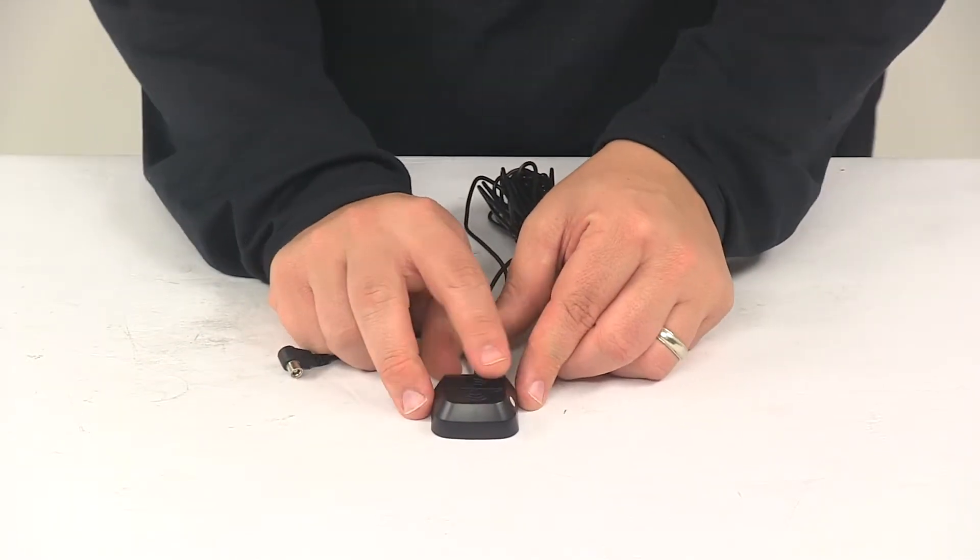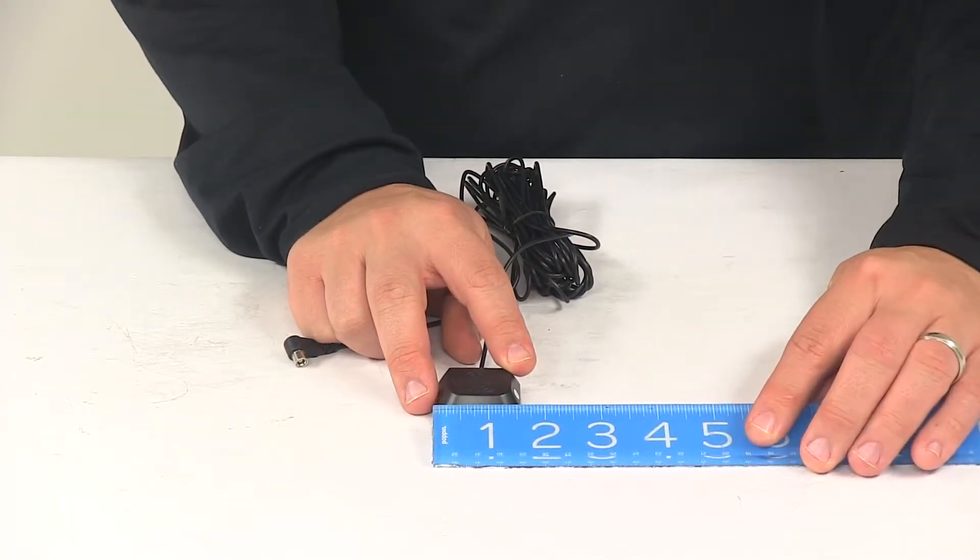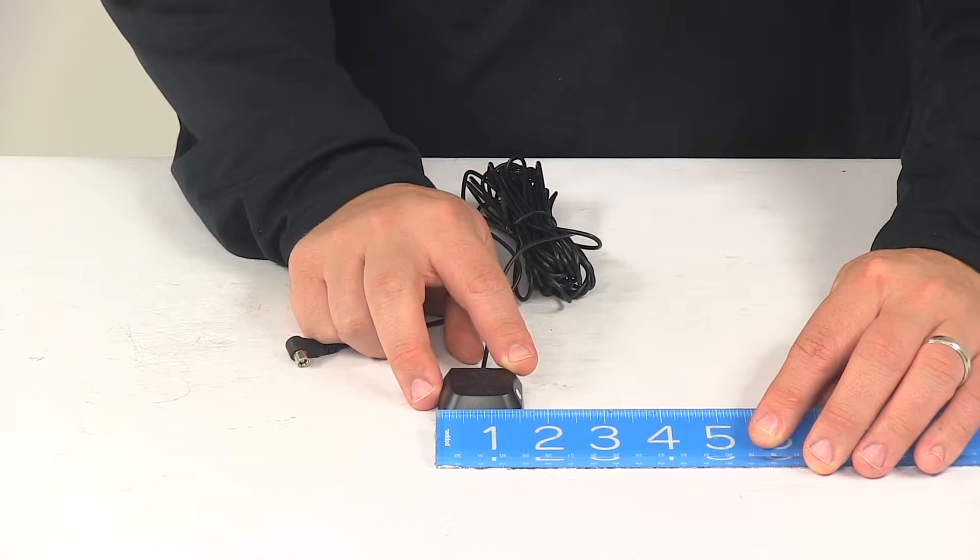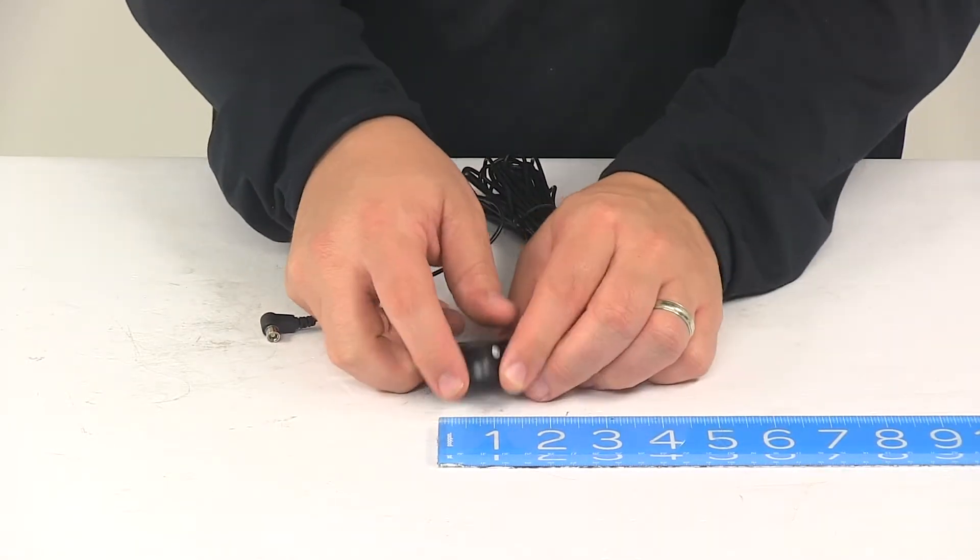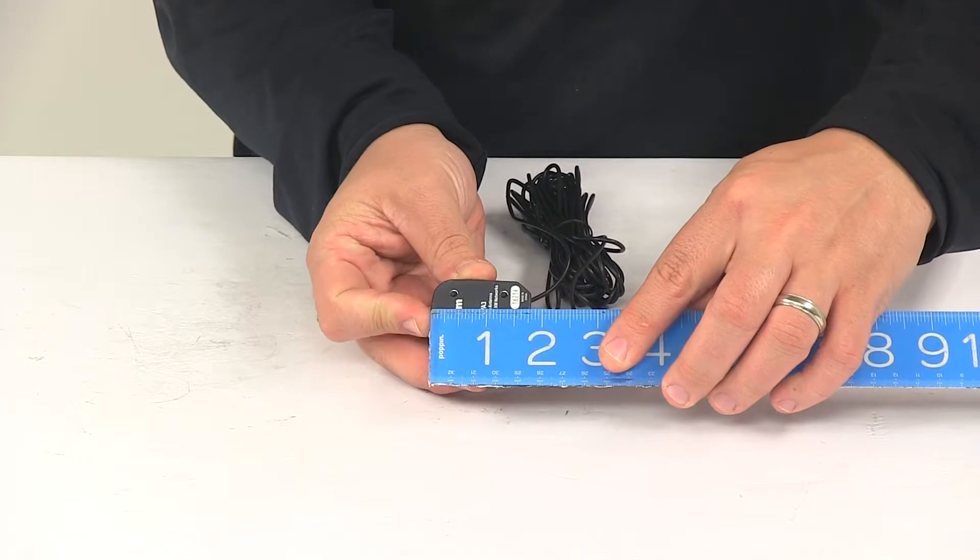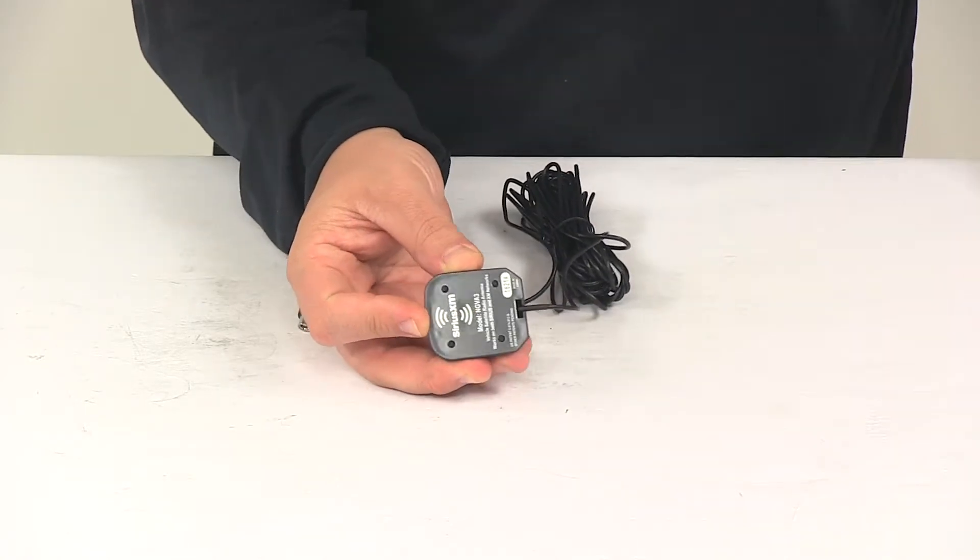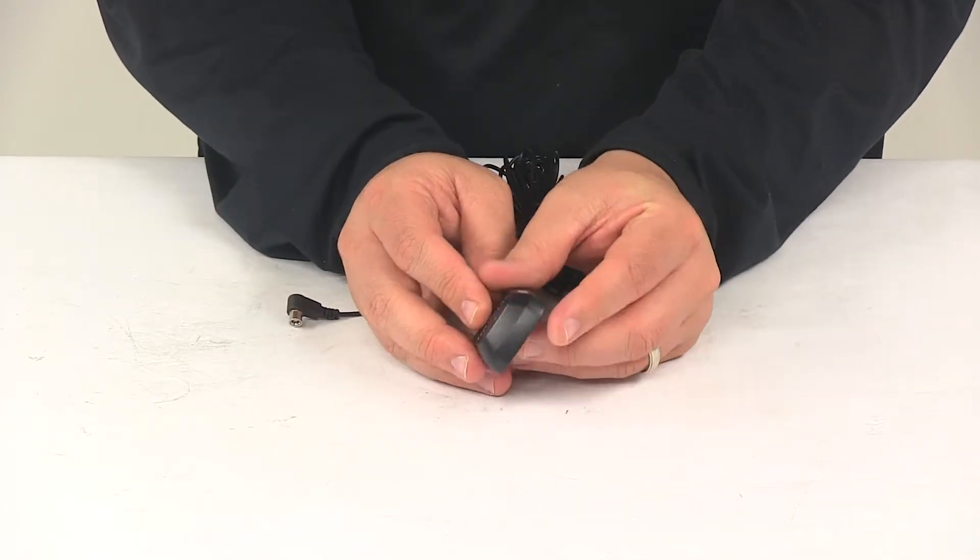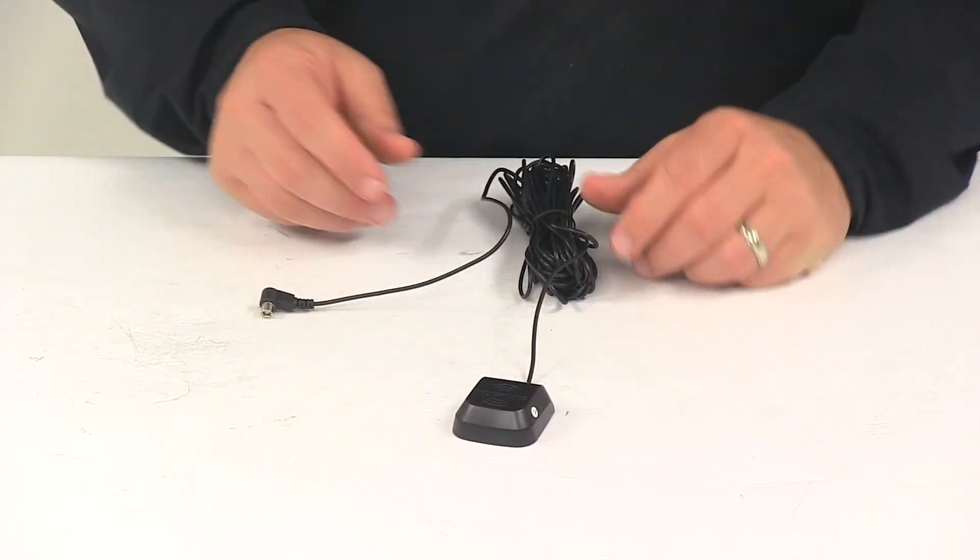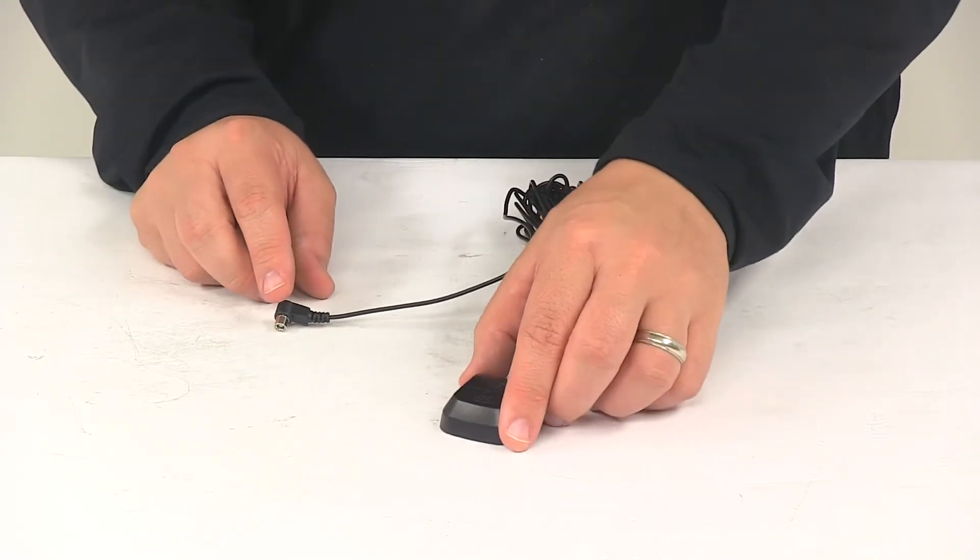This piece measures about an inch and a half wide by one and three quarters of an inch deep. From bottom to top it has a height or thickness of about five eighths of an inch, and the cord length measures about 23 feet long.